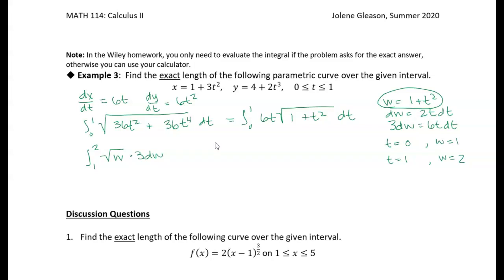And that's pretty easy to integrate, right? So I'm just going to pull the 3 out front, and then the integral of the square root of w is 2/3 w to the 3 halves. And we're going to evaluate that from 1 to 2, because I've transformed the limits of integration.